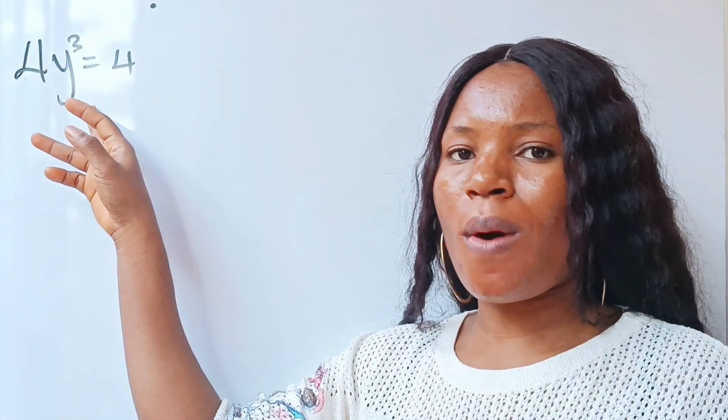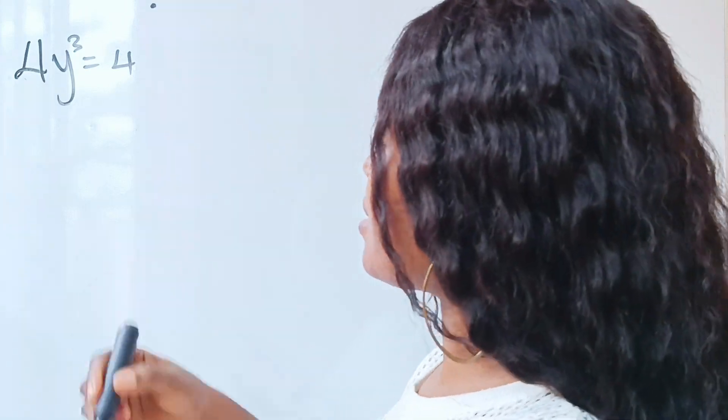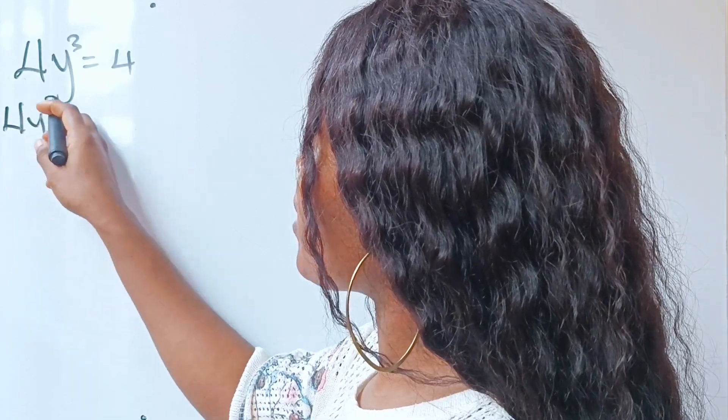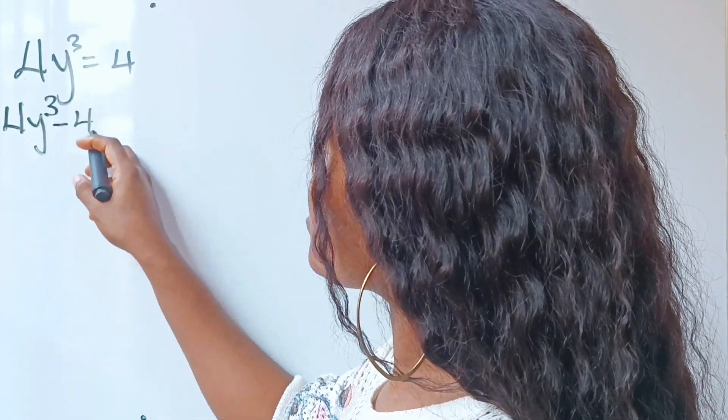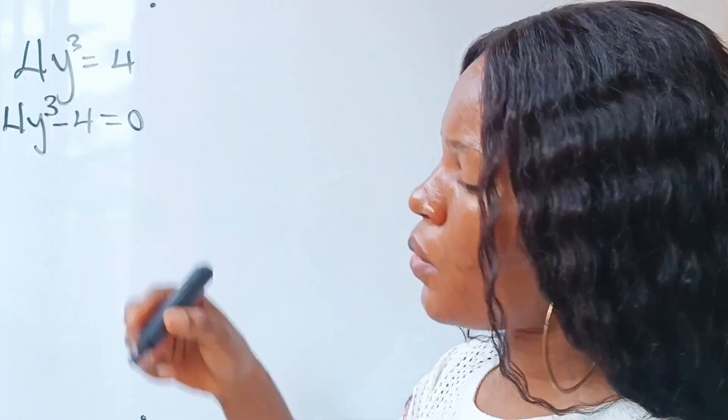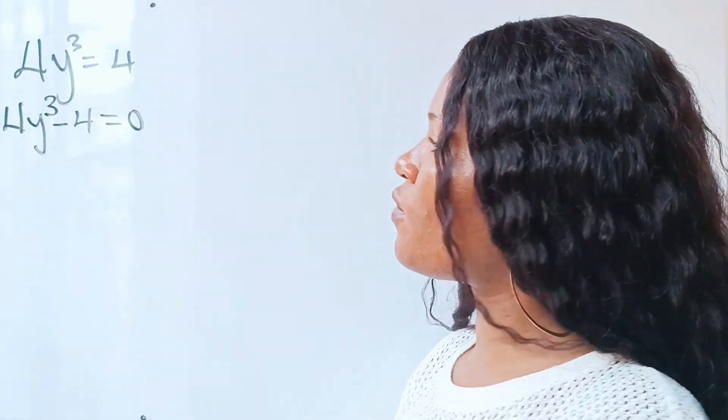Let's solve for the value of y here. To do that, let's bring this to this side of the equation. If we do that, we are going to have 4y³ - 4 = 0. Yes, this is plus 4. If it crosses the equation, it becomes minus 4.